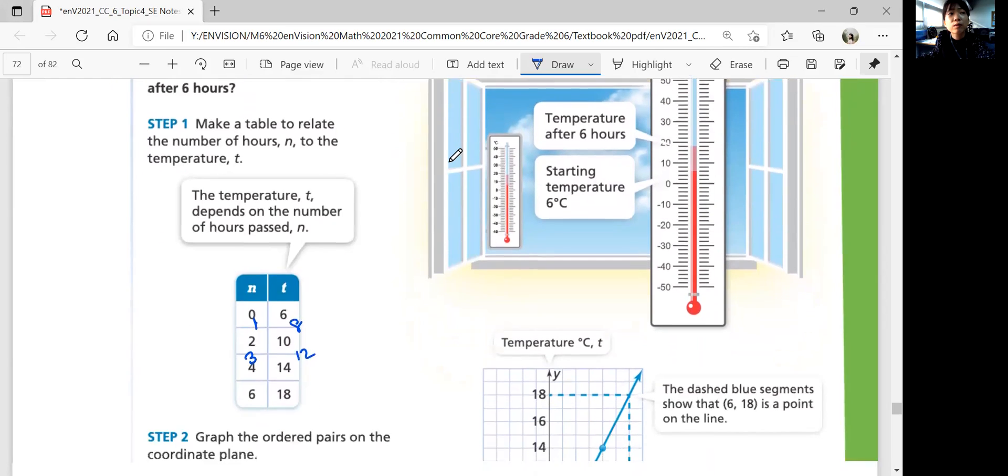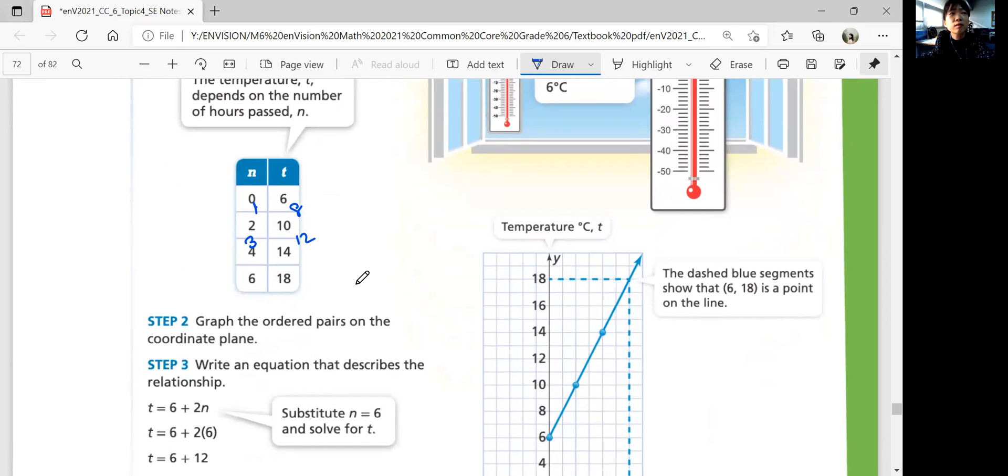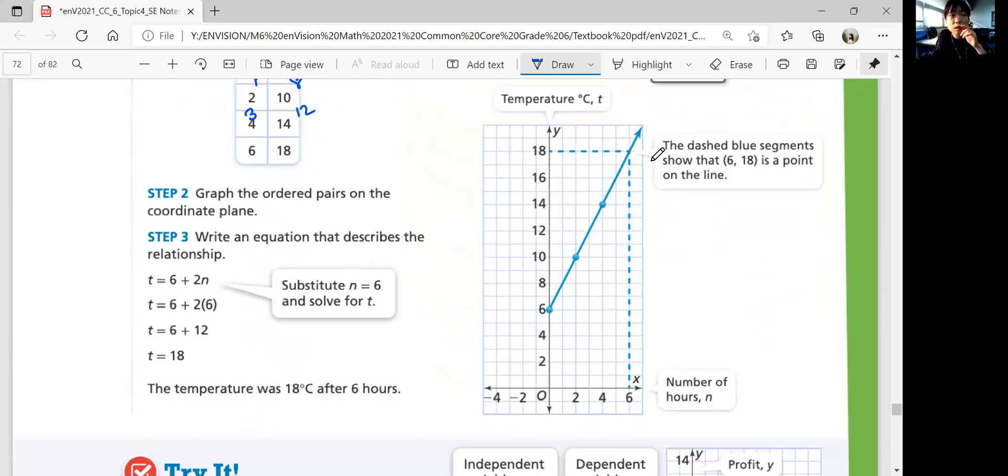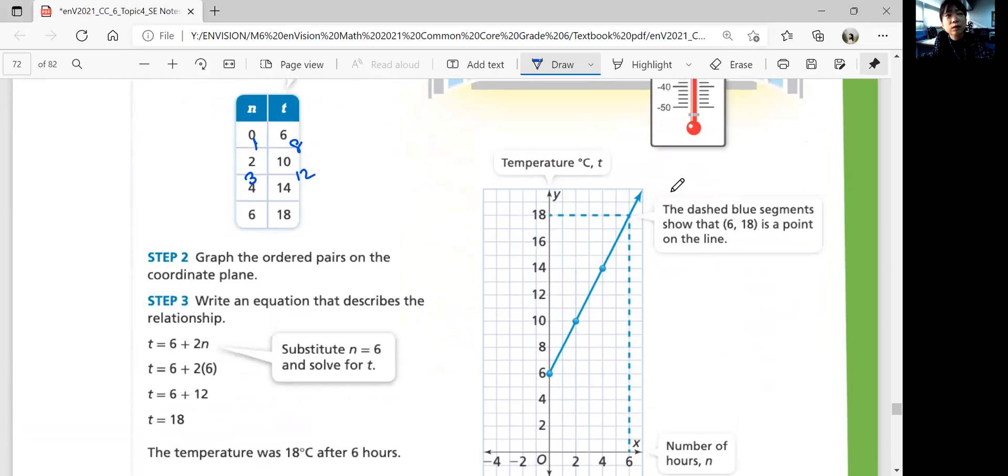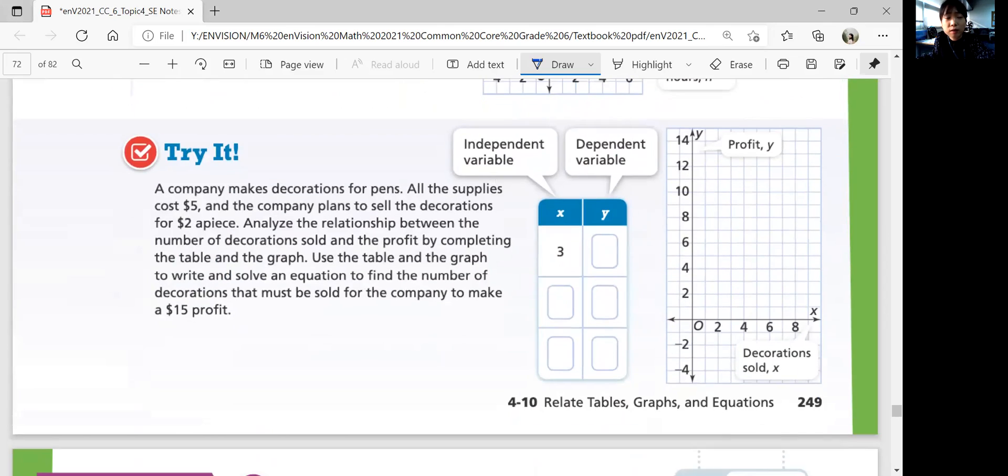What was the temperature after six hours? 18, right? The temperature was 18 after six hours. You can draw a table and you can draw a graph. And there's going to be a straight line. Let's look at the try it question. A company makes decorations for pens. All the supplies cost five dollars and the company plans to sell the decorations for $2 a piece. Analyze the relationship between the number of decorations sold and the profit by completing the table and the graph. Try this on your own and come back when you are ready.